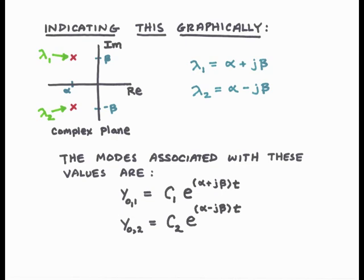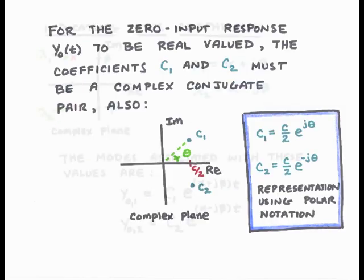The modes associated with these two values will be y0 sub 1 equal c1 e to the lambda 1 t, where lambda 1 is alpha plus j beta, and y0 sub 2 equals c2 e to the lambda 2 t, where lambda 2 is alpha minus j beta. The solution y0 has to be the sum of these two modes. For the zero input response y0 to be real valued, the coefficients c1 and c2 must occur as a complex conjugate pair also, otherwise y0 of t would have an imaginary component.